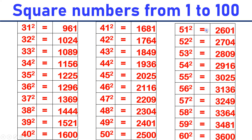51 square is equal to 2,601. 52 square is equal to 2,704. 53 square is equal to 2,809. 54 square is equal to 2,916. 55 square is equal to 3,025.